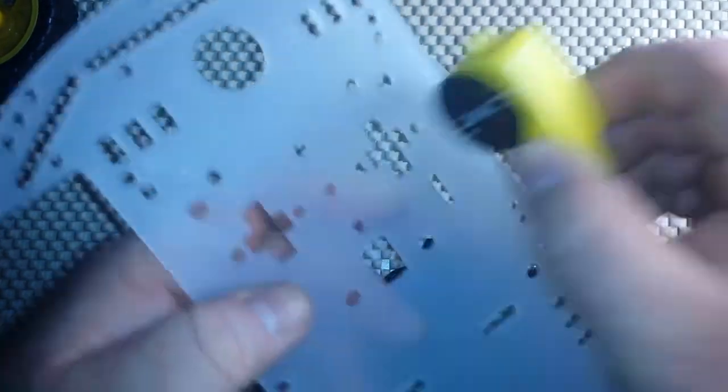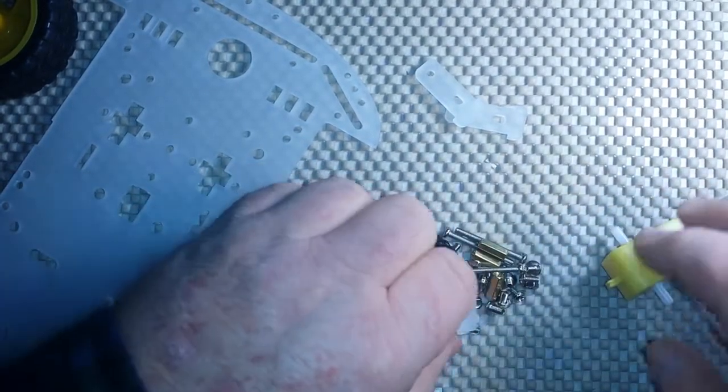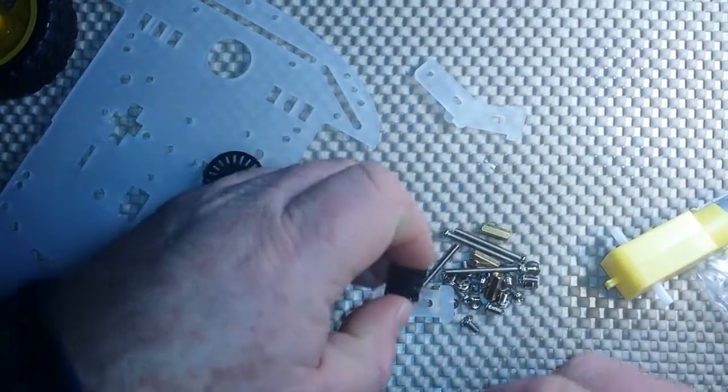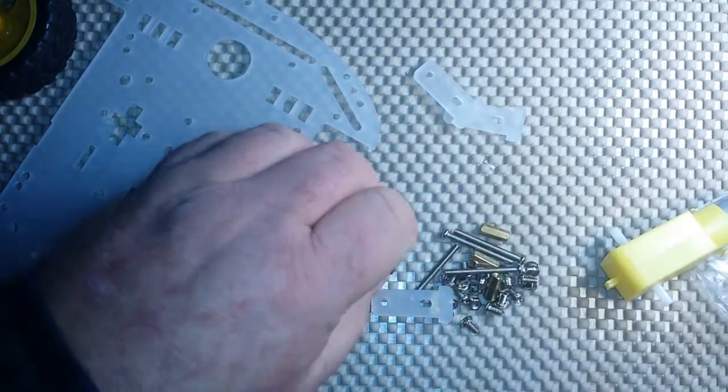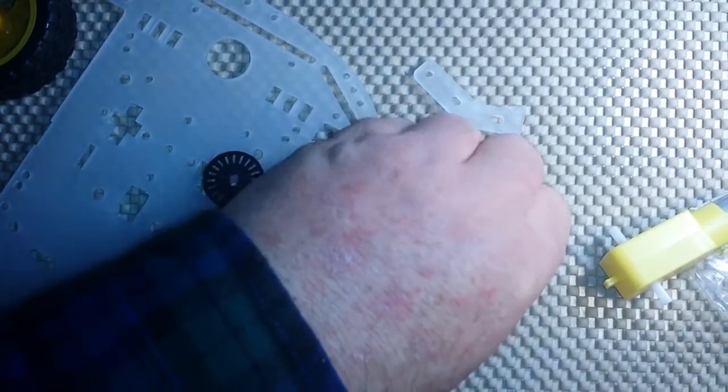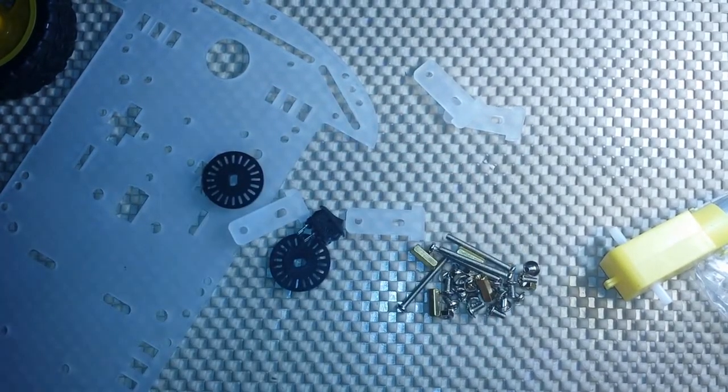We can put our encoder there, and we can actually track the speed. So that's pretty nice. Comes with a power switch, some standoffs, and some metric hardware.